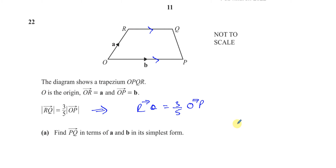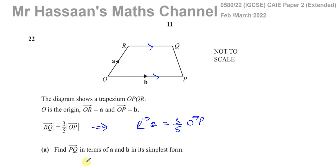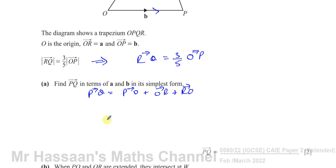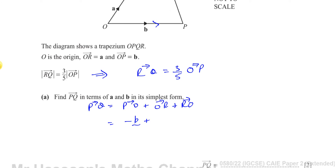It says find the vector from P to Q in terms of a and b in its simplest form. From P to Q, we can go around the whole shape: from P to O, plus from O to R, then from R to Q. We have all of these. P to O is the vector negative b, and O to R is the vector a.